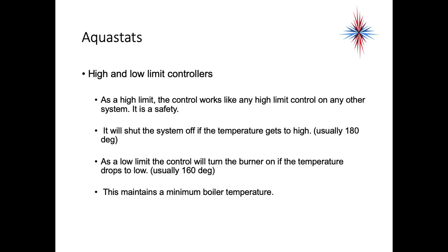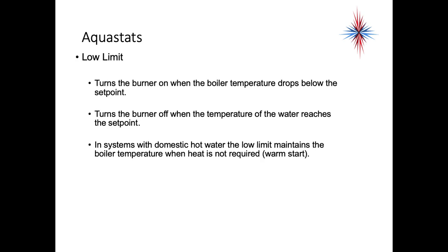As a low limit control, it will turn the burner on if the temperature drops too low, usually about 160 degrees. This maintains a minimum boiler temperature. The low limit control on the aquastat turns the burner on when the boiler temperature drops below the setpoint and turns the burner off when the water reaches the setpoint. In systems with domestic hot water, the low limit maintains boiler temperature when heat is not required — known as a warm start boiler.